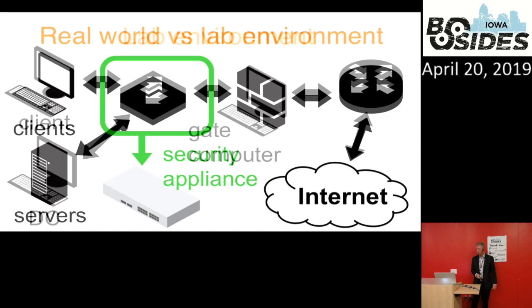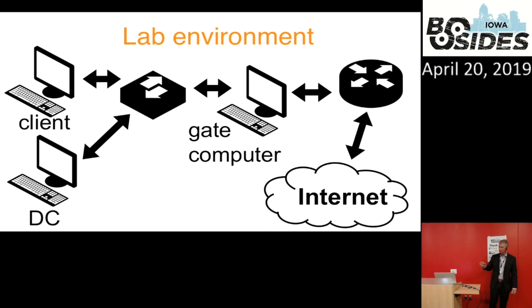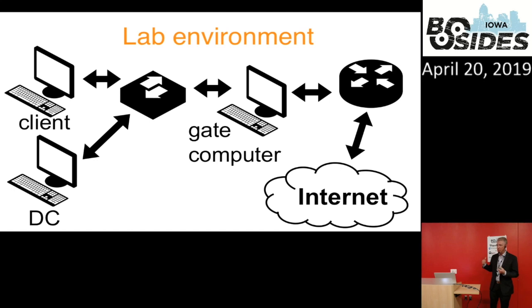For a lab environment, my physical lab setup at home has Windows clients — I'll set up a domain controller and a client — feeding into a switch monitored by a gate computer that records the traffic, then routed out to the Internet. When I have this set up, I'm using intentionally vulnerable machines with no protection whatsoever because I want a full infection chain of events — from the very beginning of the infection to anything that could possibly happen on that infected Windows host.